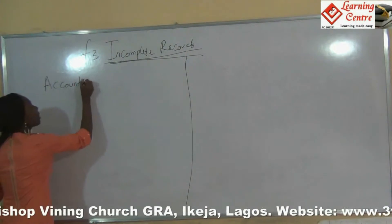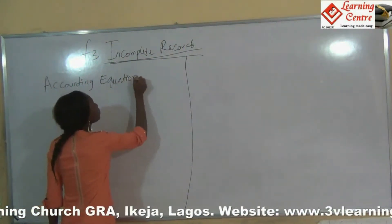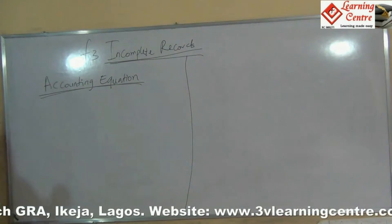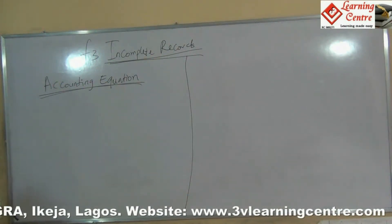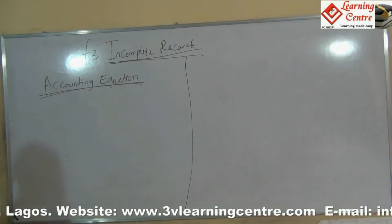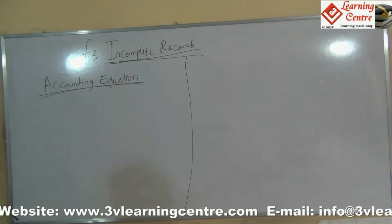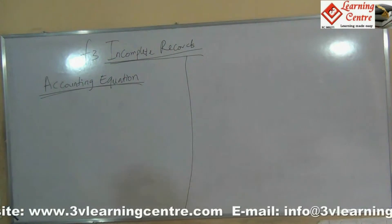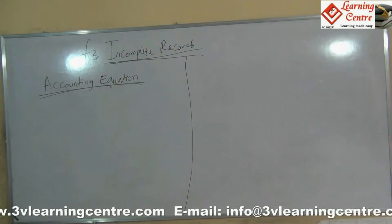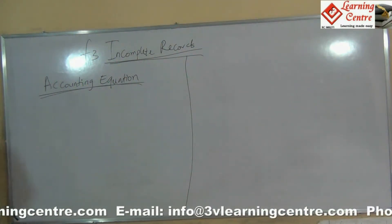The overall aim is to prepare the financial statements, but we don't have enough information to do so. The reasons for incomplete records include poor financial control, a non-qualified accountant preparing the accounts, someone who does not know double entry, or a fire incident that destroyed information — these are the basic reasons why financial statements would not be complete.